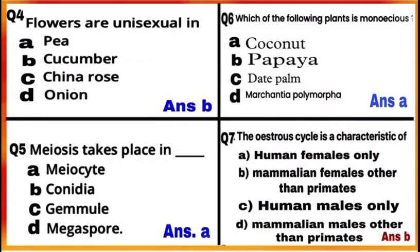Question 4: Flowers are unisexual in option B, cucumber. Separate male and female flowers are present in cucumber, but both types of flowers are present on the same plant. So cucumber flowers are unisexual but the plant is monoecious.